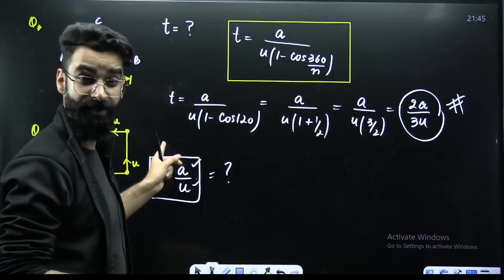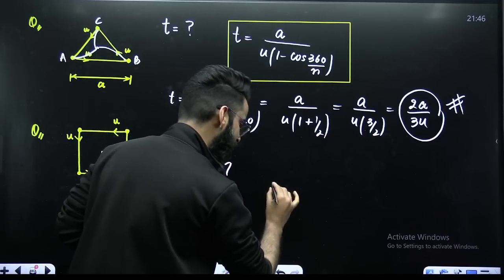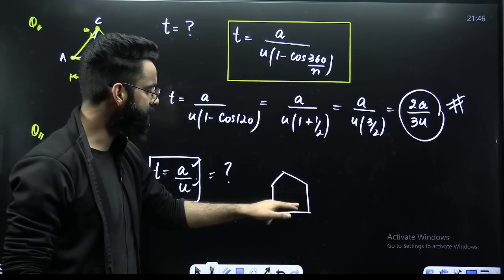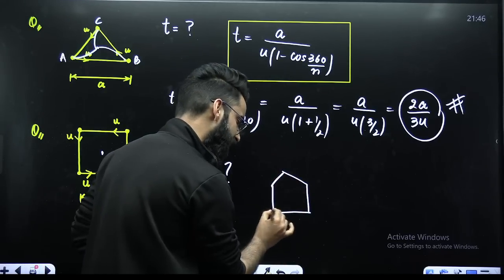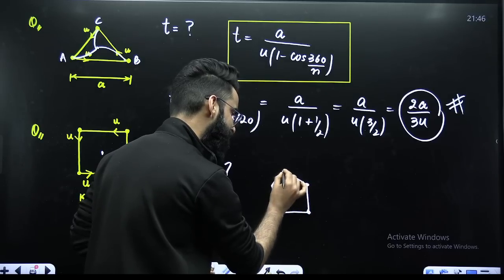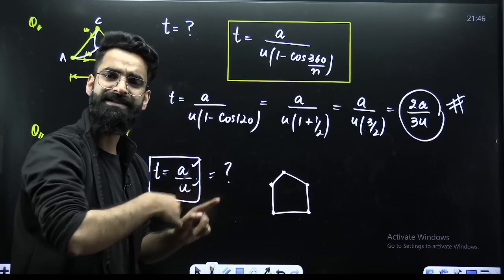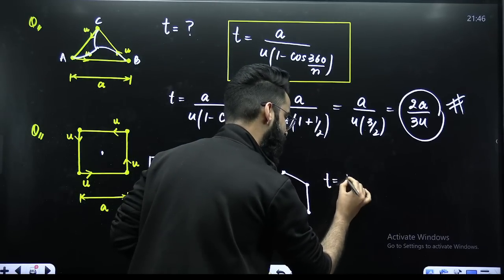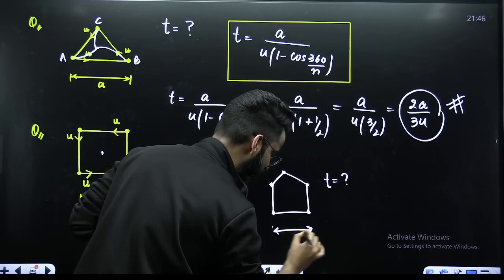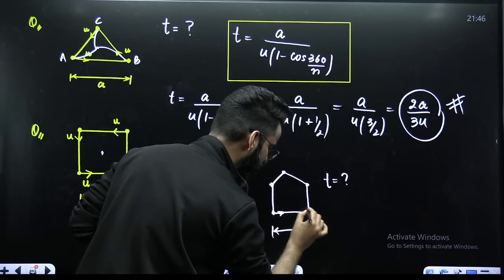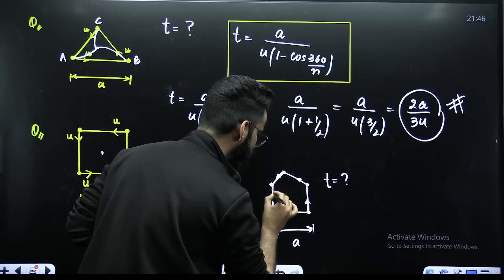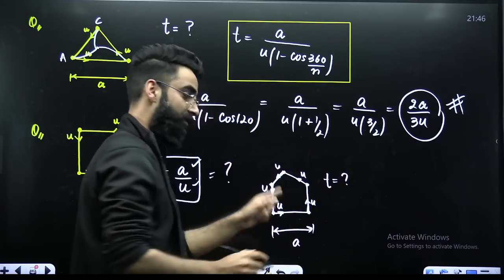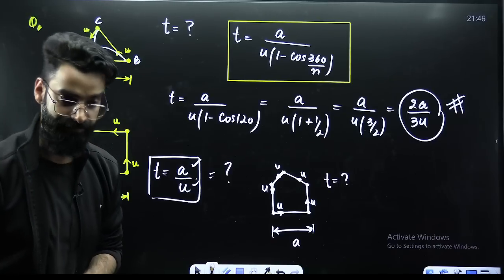I am giving you one homework question. You have a pentagon — 5 particles placed at the vertices of this pentagon. All 5 particles started moving towards each other. At what time are they going to meet? Let the side length be A and the speed with which the particles started moving towards each other be U. Do let me know the answer in the comment section of this video.